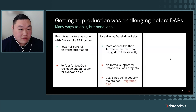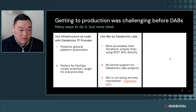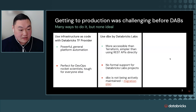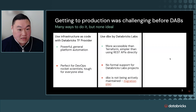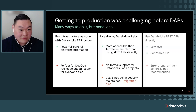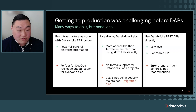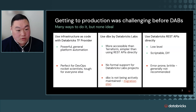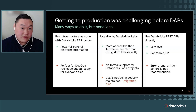Prior to that, we also had DBX, which sat above our REST APIs. It was more accessible than Terraform, but there was no formal support and we've actually sunsetted it — it's not being actively maintained, and we will link the migration plan. We also have Databricks REST APIs, which are low-level and scriptable but more do-it-yourself. They're error-prone and brittle, generally not recommended, and don't have any state file type of support.